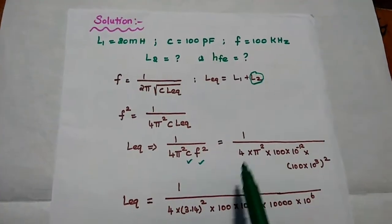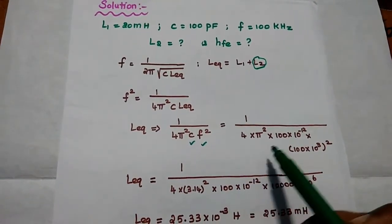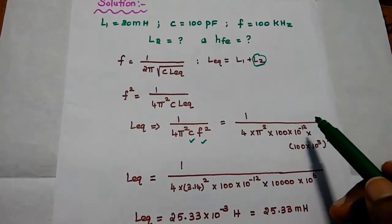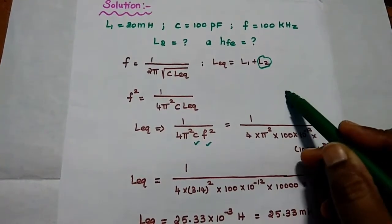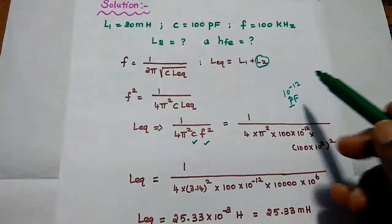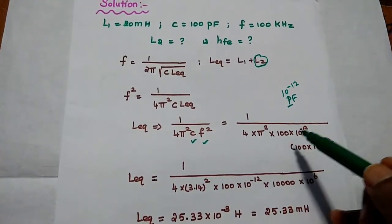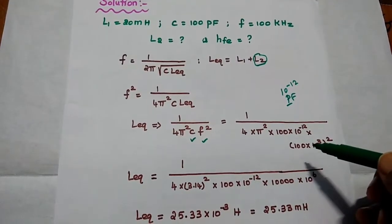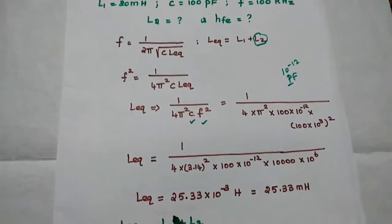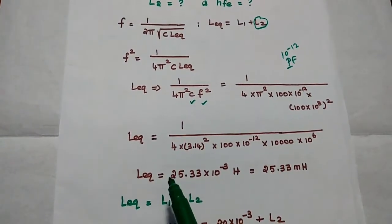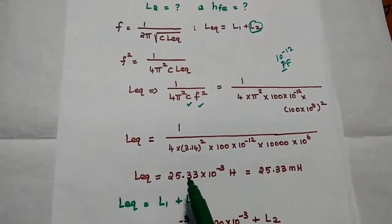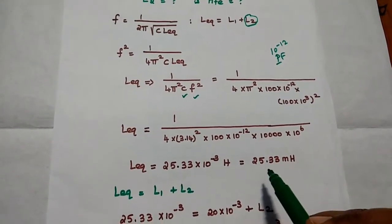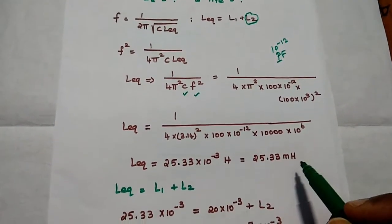Substituting: 1 divided by 4 into π squared, capacitance value is 100 into 10 to the power minus 12 (pico means 10 to the power minus 12), and F value is 100 kilohertz. We can get the value of L_equivalent as 25.33 into 10 to the power minus 3 Henry, which can be written as 25.33 millihenry.